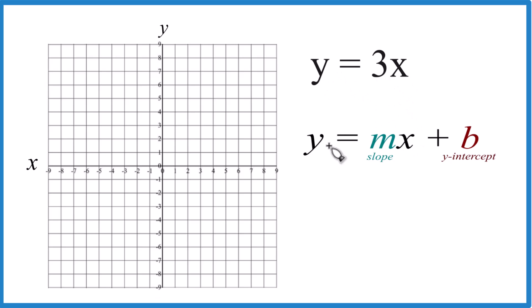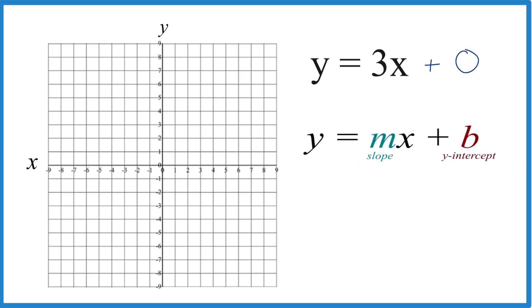y equals 3x. So y equals mx plus b, but we don't seem to have a b up here. Let's just call it plus 0. So 0, that's our y-intercept. So we take a point and we go to 0 on the y-axis.